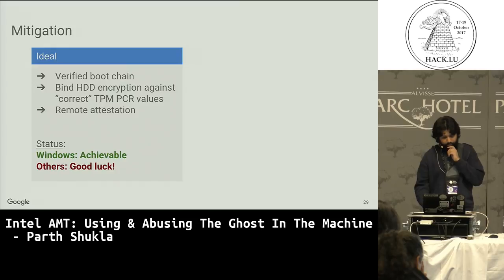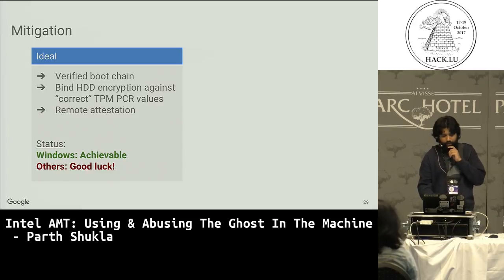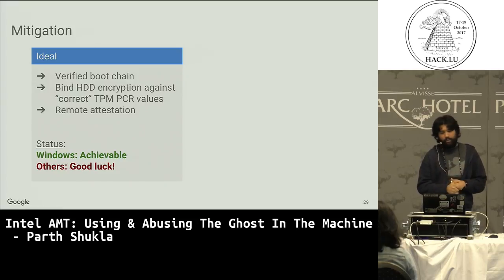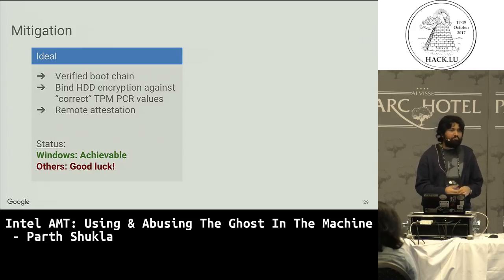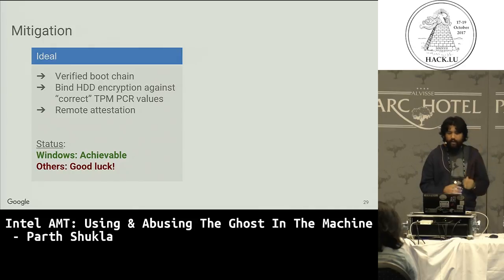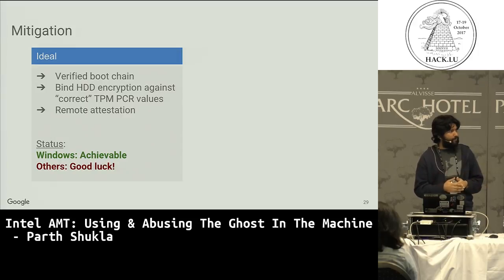What about mitigations? The ideal mitigation is a verified boot chain — you can't replace the boot loader with a malicious one because the machine just won't boot, or the hard drive won't decrypt without the correct password. For Windows this is doable with Secure Boot and BitLocker, though it's about setting them up correctly. Keep in mind that if the BIOS doesn't have a password, an attacker can just go to the BIOS and disable Secure Boot. But if you still have TPM-bound hard drive encryption keys, you're still protected — it depends on what layers of protection you've already enabled.